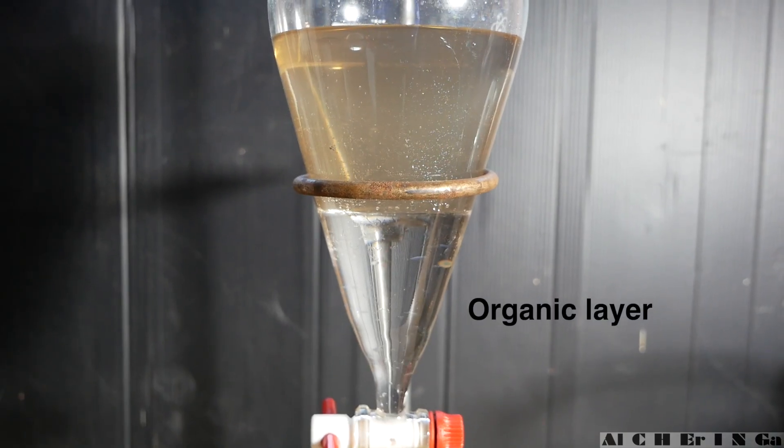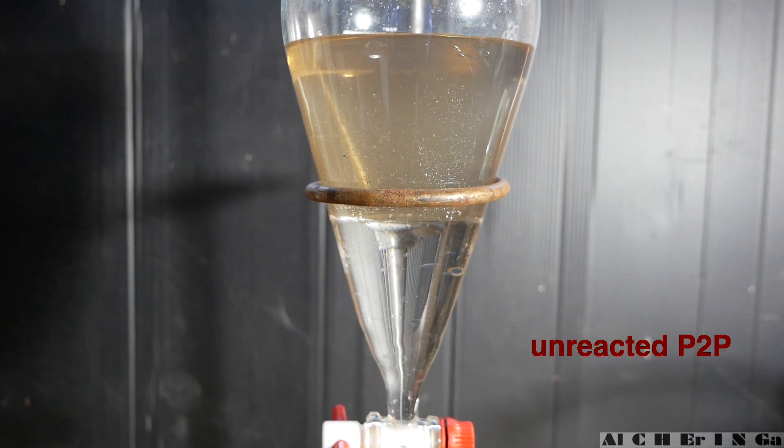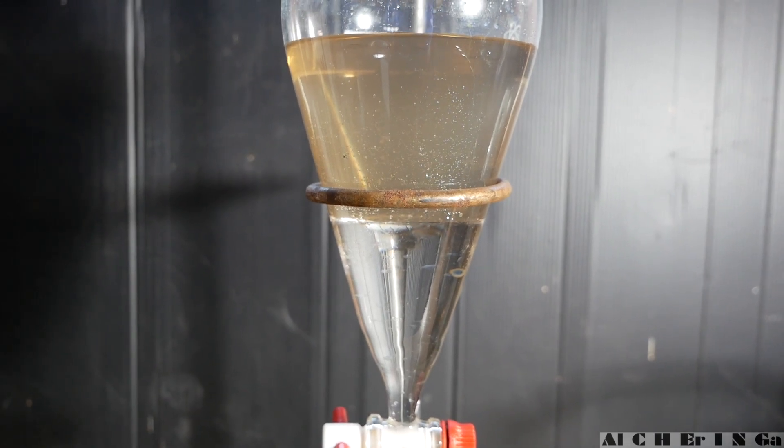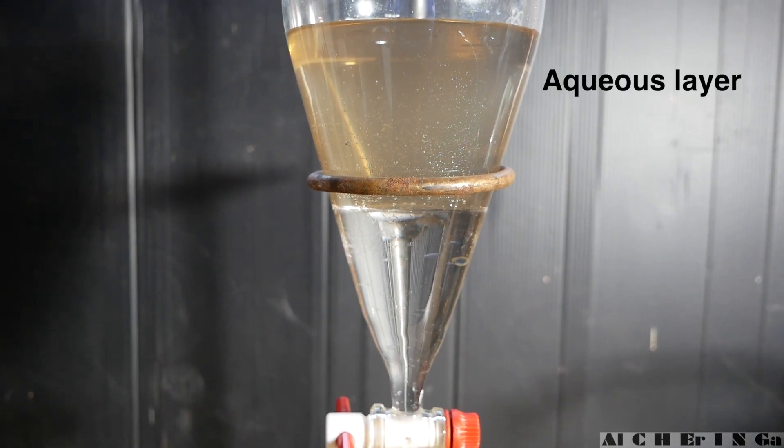The bottom layer is the organic layer which contains the unreacted 1-phenyl-2-propanone that we don't want. The upper layer is the aqueous layer which contains our product.